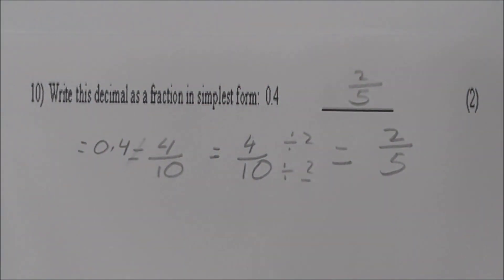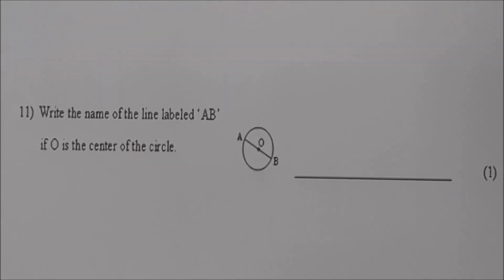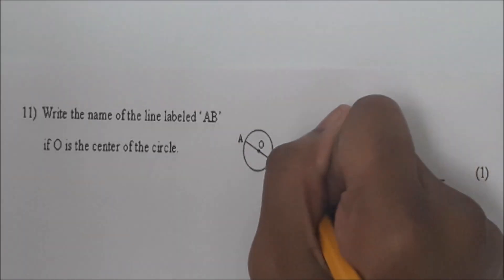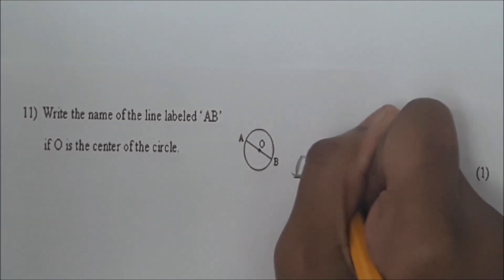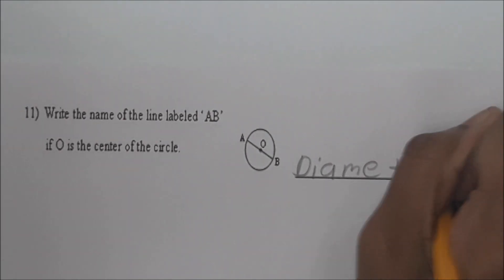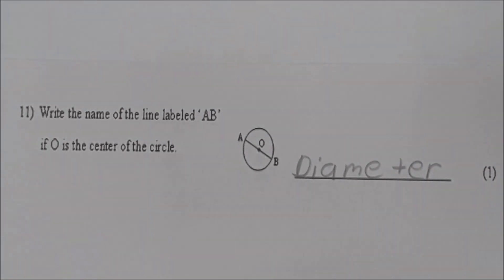4 divided by 2, 10 divided by 2, because 2 is the HCF, and then you get 2 over 5. Excellent job. Read number 11. Write the name of the line labeled AB if O is the center of the circle. What do you call that line? A diameter. Write it. Diameter. Very good.